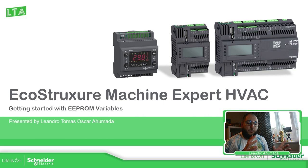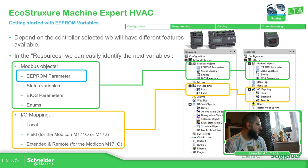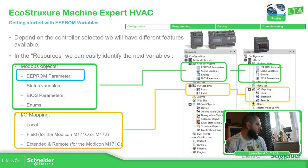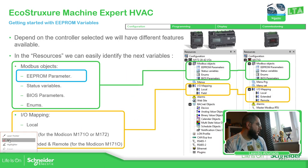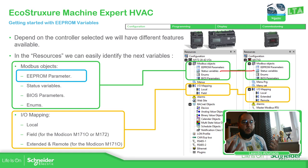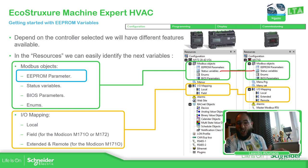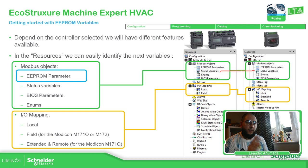In the previous video we saw the status variables. We can define values there, but as soon as we assign a value and power cycle the equipment, the variable is lost — unless we add additional logic to store it elsewhere, but that's another topic. The status variables simply lose their value and start from the default, which is zero.